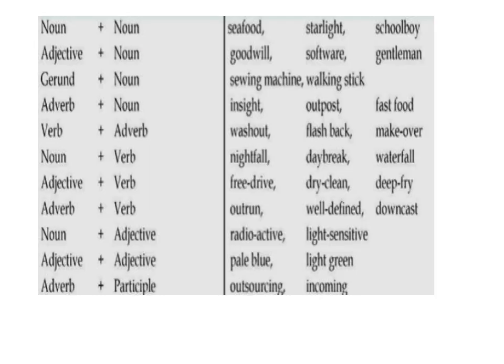Compound word combinations by part of speech. Noun + noun: seafood, starlight, schoolboy. Adjective + noun: goodwill, software, gentleman. Gerund + noun: sewing machine, walking stick, washing machine.